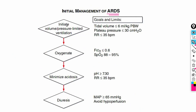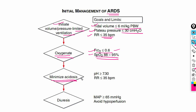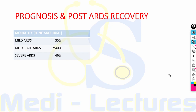Treatment summary: initiate volume-pressure limited ventilation with tidal volume ≤6 ml/kg predicted body weight, plateau pressure <30 cmH2O, and respiratory rate ≤35. For oxygenation, keep FiO2 ≤60% to maintain SpO2 between 88–95%. Minimize acidosis by keeping pH ≥7.3 with respiratory rate ≤35. Use diuresis to decrease pulmonary edema, but maintain mean arterial pressure of at least 65 mmHg to avoid hypoperfusion.